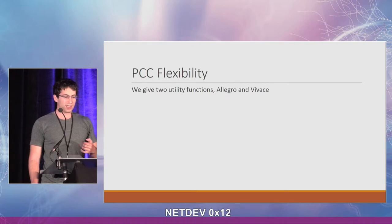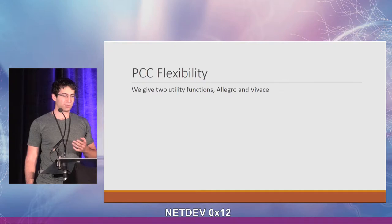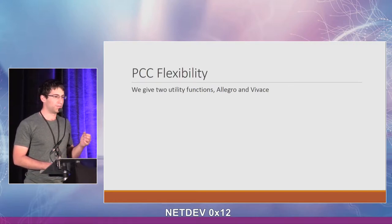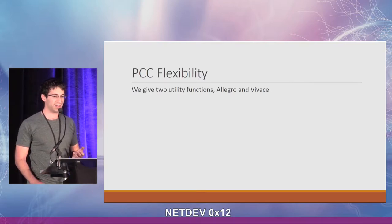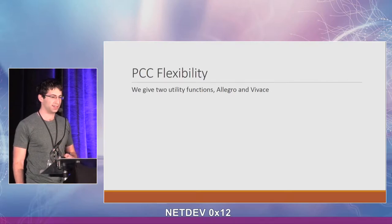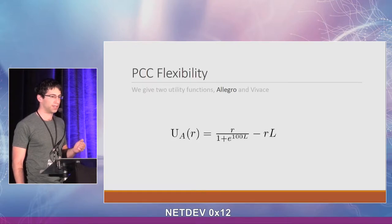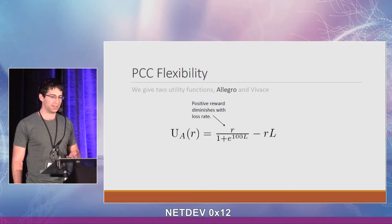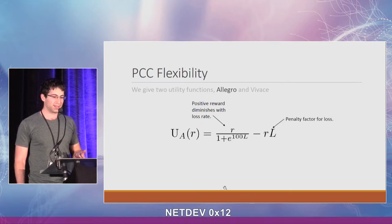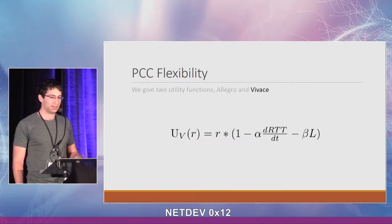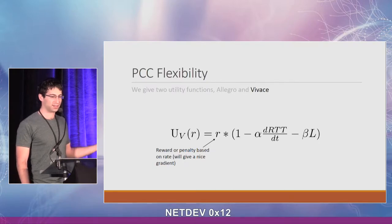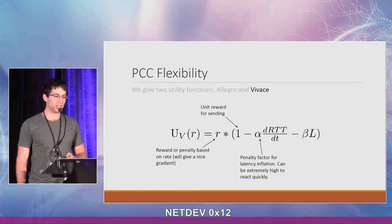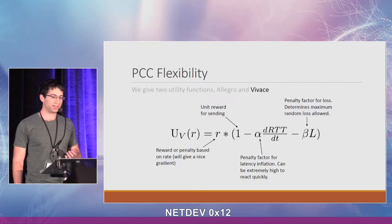In our implementation we provide two utility functions: Allegro and Vivace, named after the versions of PCC in which they were first introduced — Allegro from NSDI 2015 and Vivace from NSDI 2018. Allegro is a completely loss-based utility: it rewards the sender for sending at a certain rate, and this reward diminishes with the loss rate. Vivace still has rewards and penalties based on the current loss rate, but it also penalizes for the change in latency over time.